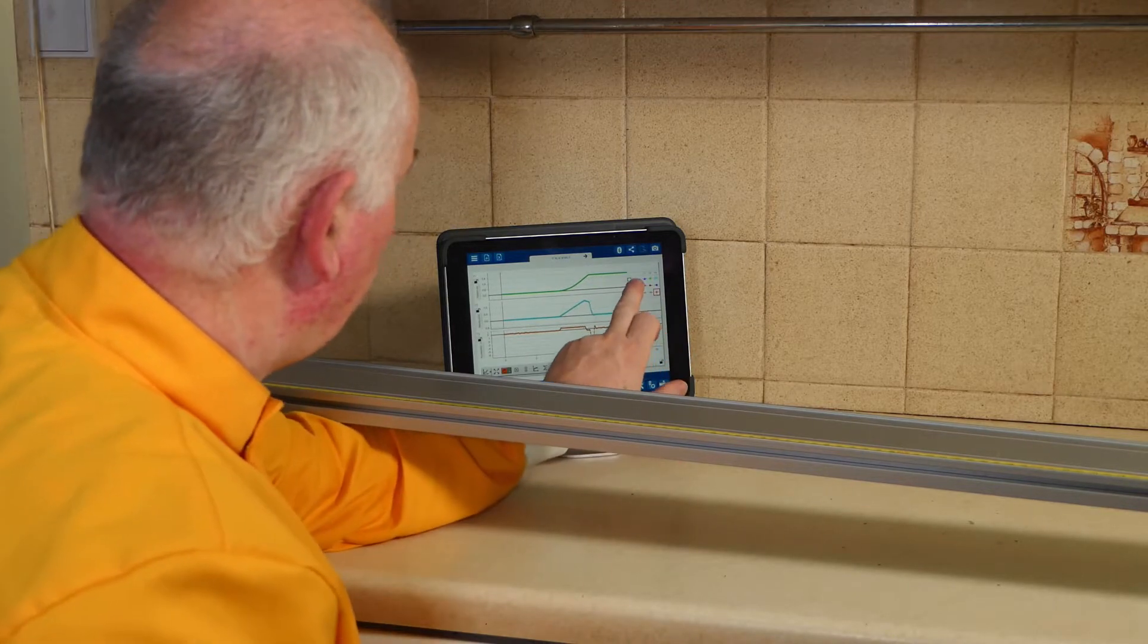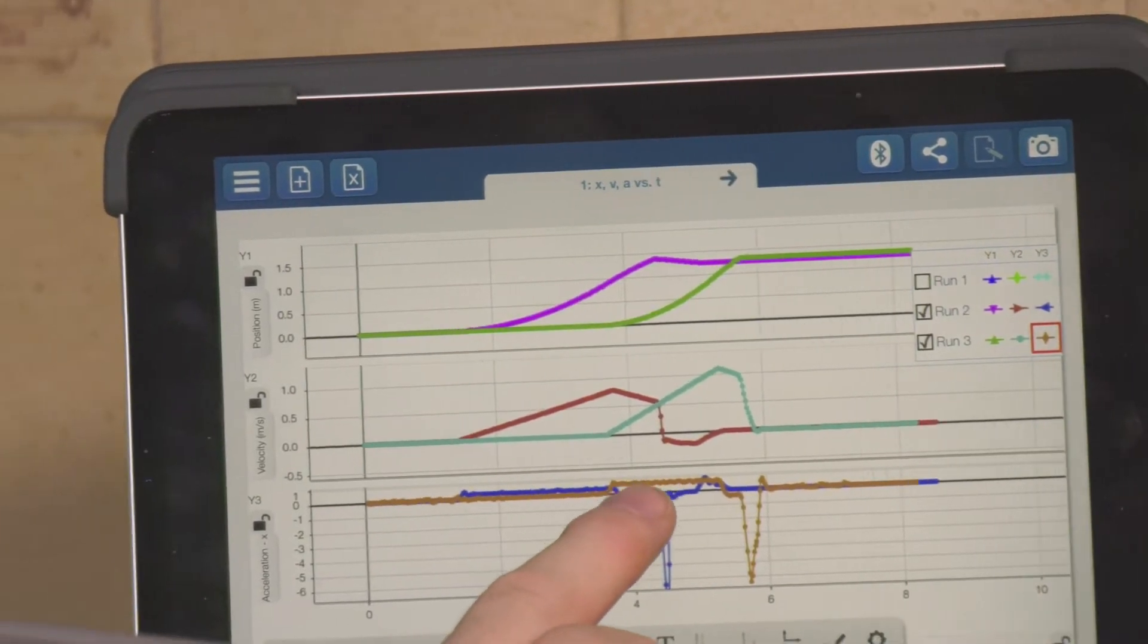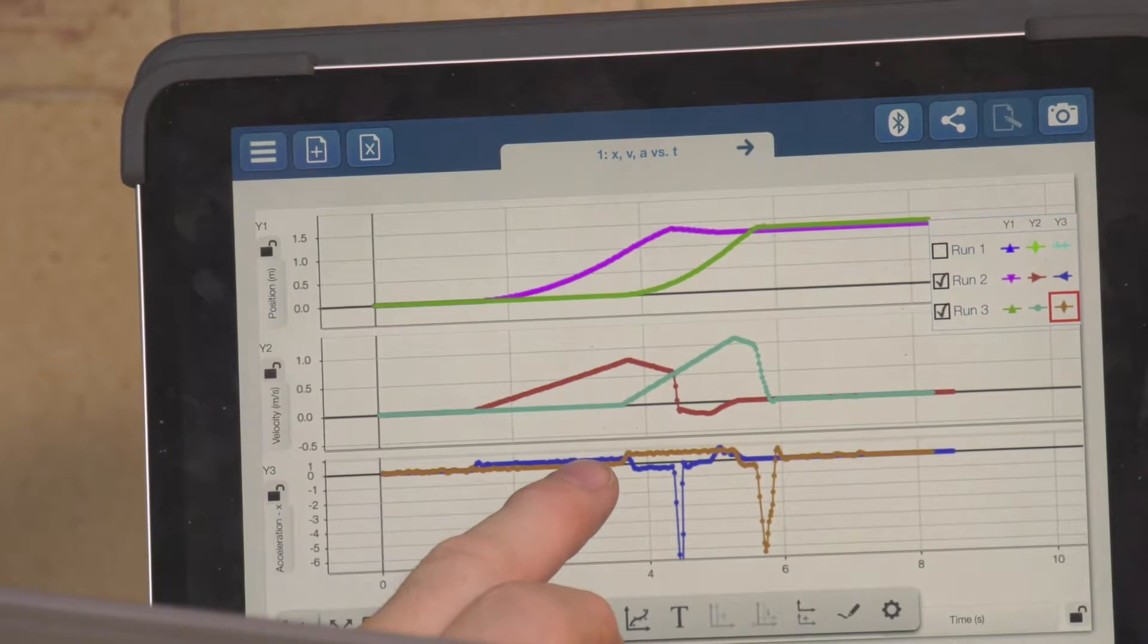So if we compare run one and run two, we can see for the acceleration the line is higher than the first line.